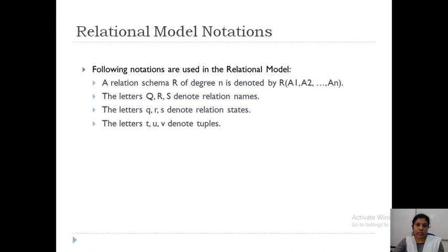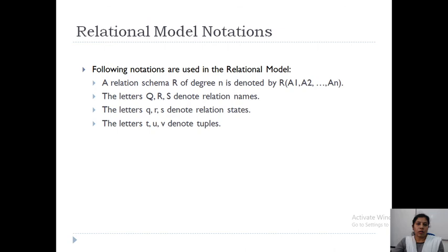Finally, the different notations used in the relational model: capital letters R denote the relation schema with degree N, written as R(A1, A2, ..., An). Capital Q, R, S denote relation names; small q, r, s denote relation states; small t, u, v denote tuples; and small v1 indicates a value taken from the set of permitted values of attribute A1.